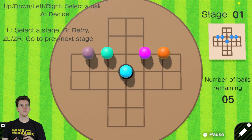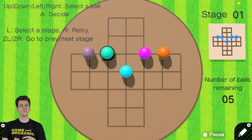Okay, so let's start with stage one. Up, down, left, right, select a ball. A to decide. Select a stage. R retry.